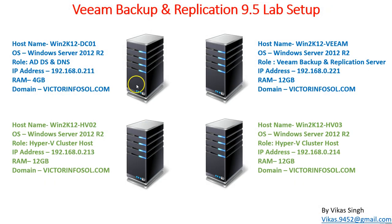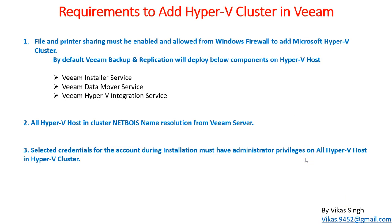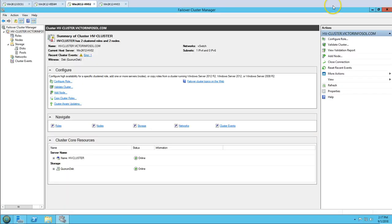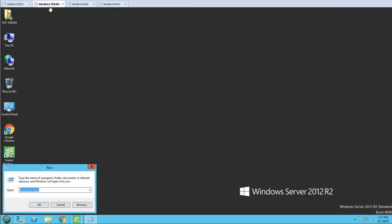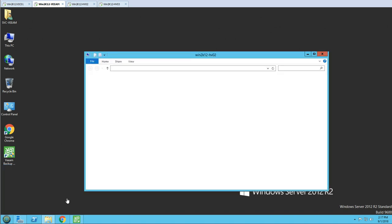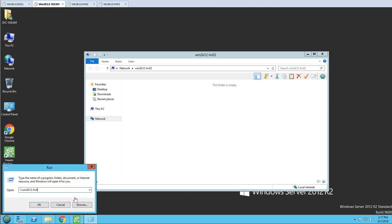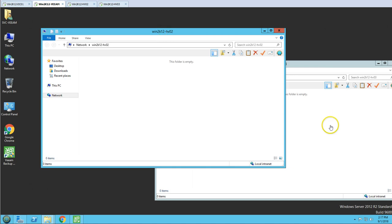The requirements are the same as when adding standalone Hyper-V hosts, but we need to make sure all pre-requisites are verified and fulfilled for every Hyper-V host that is a member of the cluster. The first requirement is that file and printer sharing must be enabled and allowed through the Windows Firewall. I'm verifying this from Veeam — I can access file shares on both HV02 and HV03, so the first part is verified successfully.